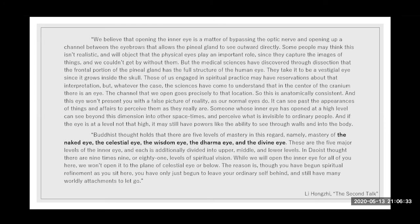Buddhist thought holds that there are five levels of mastery in this regard: the naked eye, the celestial eye, the wisdom eye, the dharma eye, and the divine eye — these are the five major levels of the inner eye, each additionally divided into upper, middle, and lower levels. In Taoist thought there are nine times nine, or 81, levels of spiritual vision.